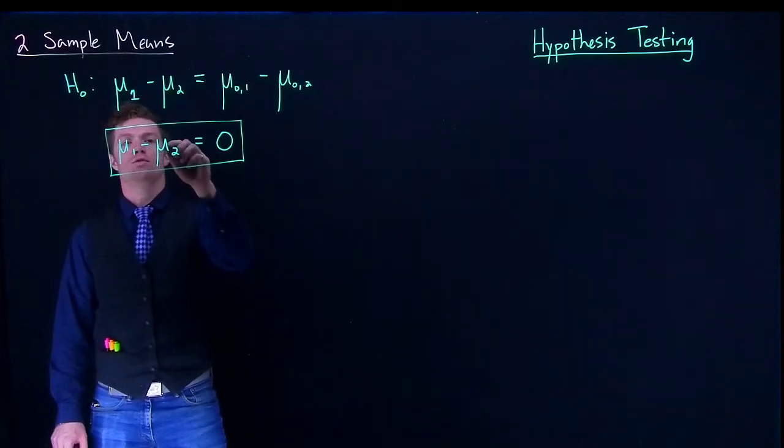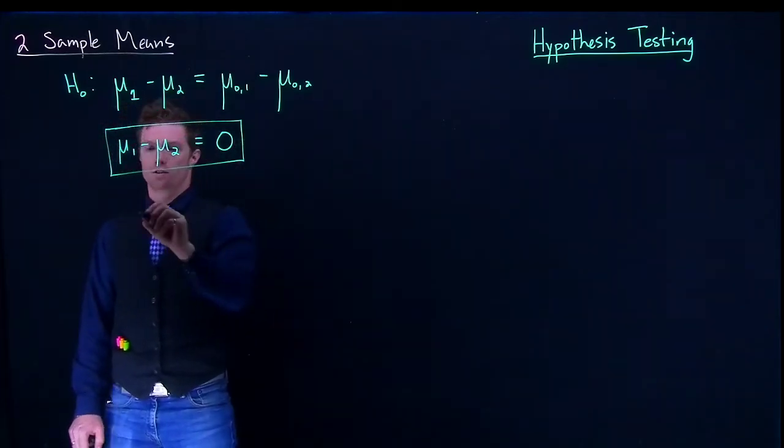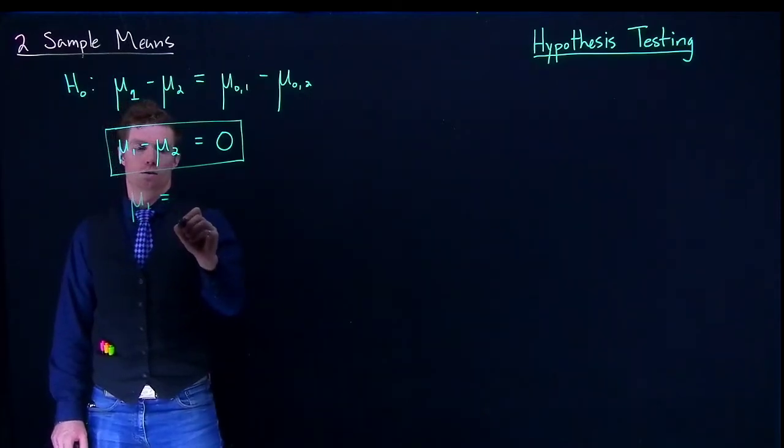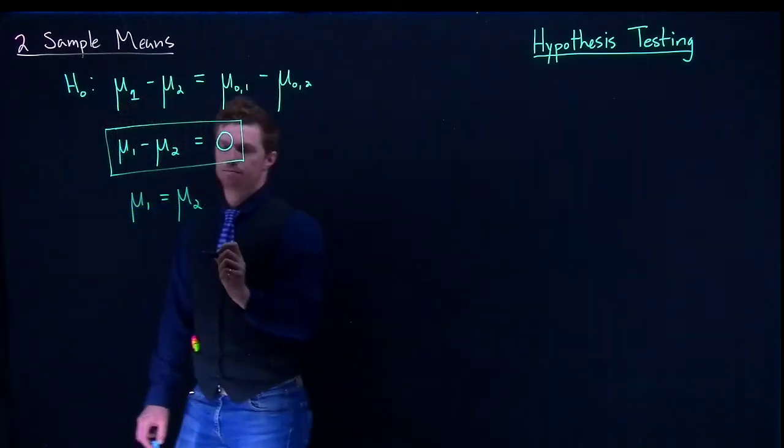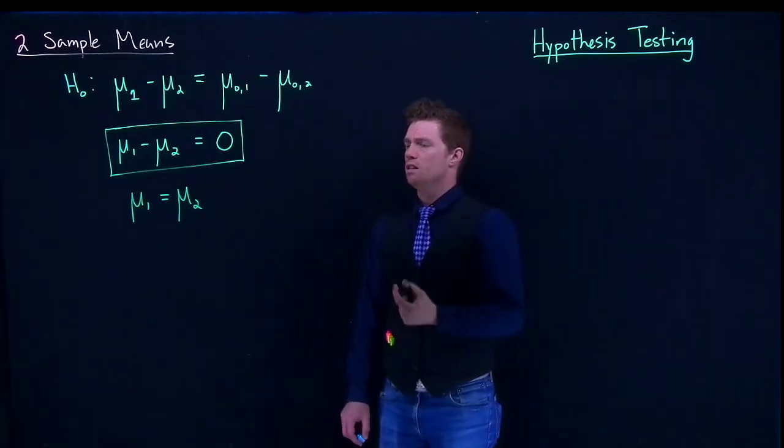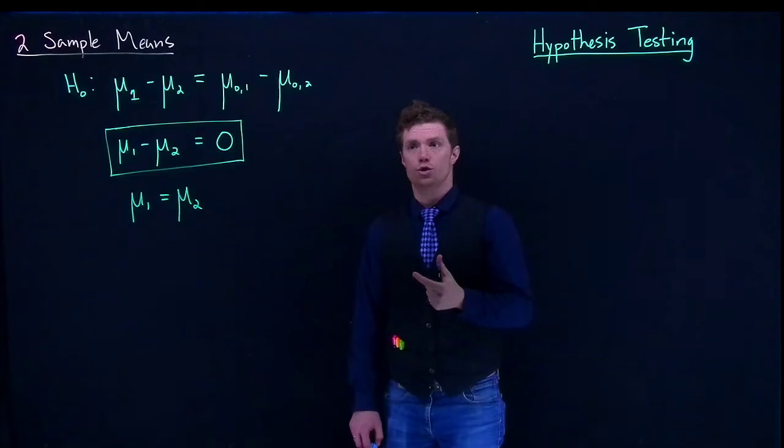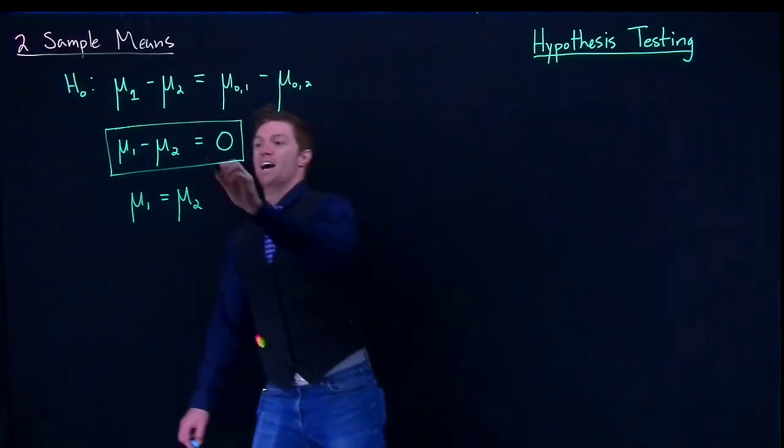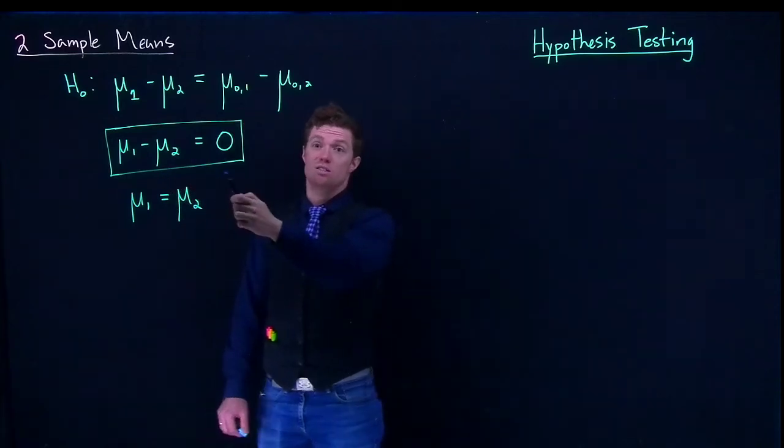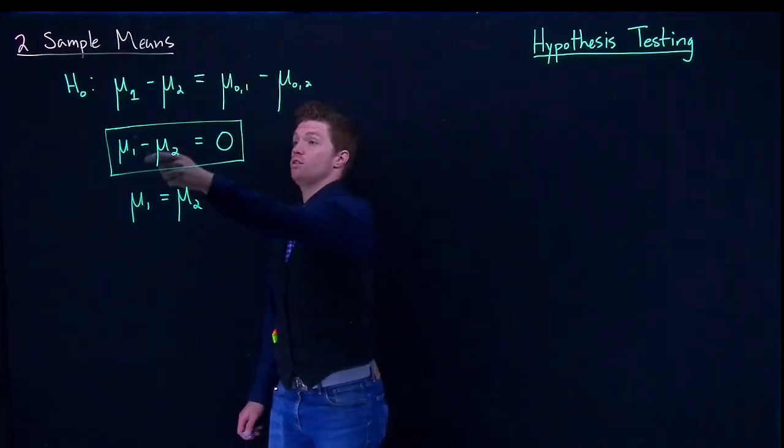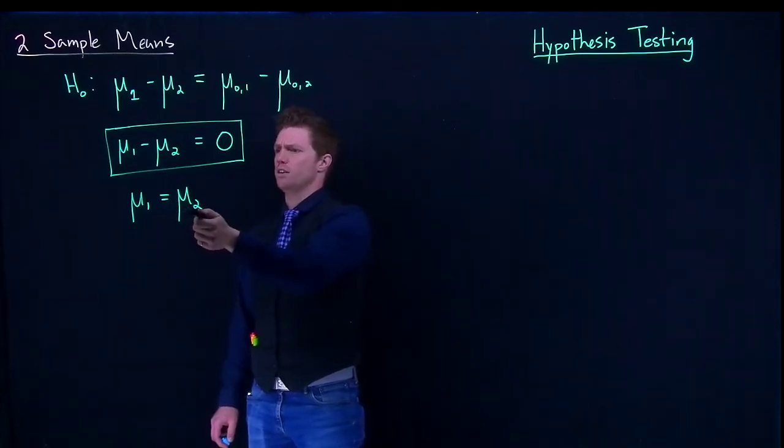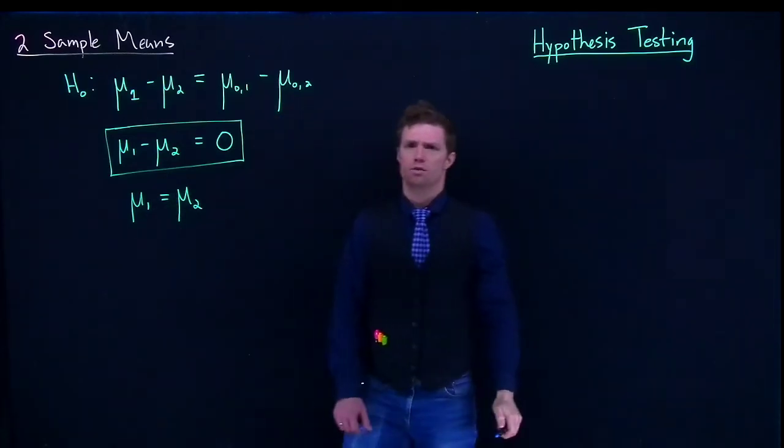What we can do is we can just move this mu2 to the other side, and so you wind up getting this guy of mu1 equals mu2. So totally valid. It's just for saying that the null hypothesis is that these two means are equal to one another. But I like this version better. So when you see me do it in all of our examples and stuff, you'll see me put it up in this format. But you'll see it in textbooks a lot and other examples written up in this format.